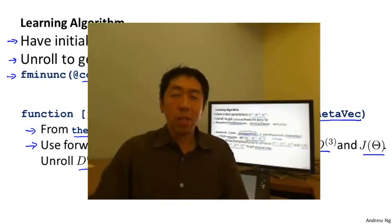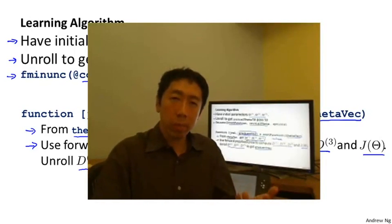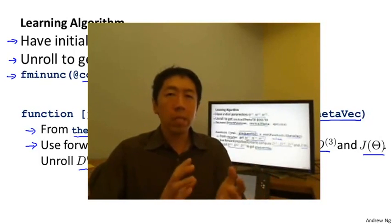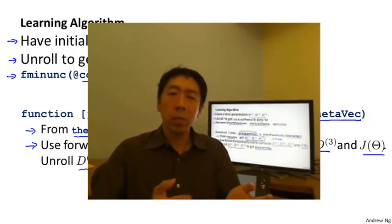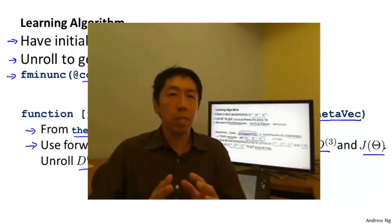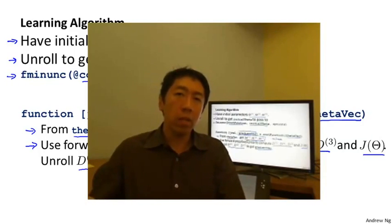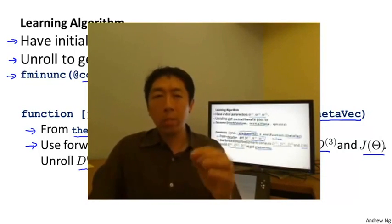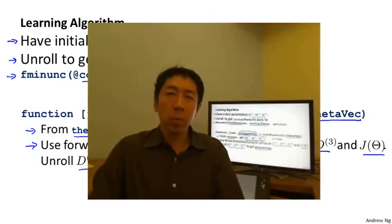Hopefully you now have a good sense of how to convert back and forth between the matrix representation and the vector representation of the parameters. The advantage of the matrix representation is that it's more convenient for forward propagation and back propagation, and easier to take advantage of vectorized implementations. The advantage of the vector representation — theta vec or D vec — is that advanced optimization algorithms assume all parameters are unrolled into a big long vector, so you need both representations and can now quickly convert between them as needed.